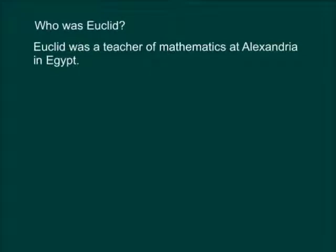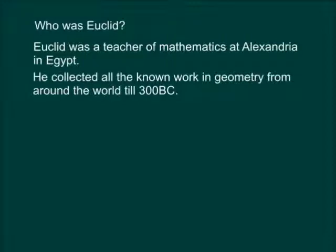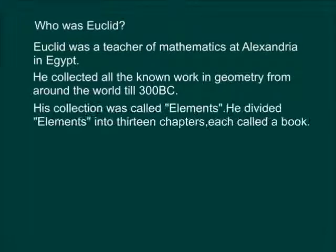Euclid was a teacher of mathematics at Alexandria in Egypt. He collected all the known work in geometry from around the world till 300 BC. His collection was called Elements.